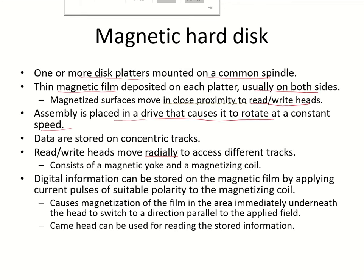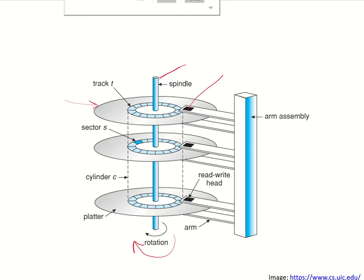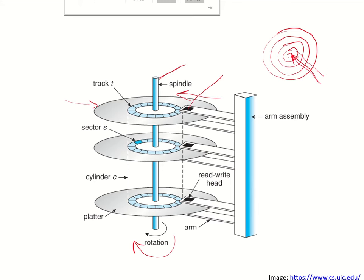These read-write heads can move radially to access the different tracks, because the data on the surfaces is stored in concentric tracks. On each platter, the data is stored in concentric tracks and the read-write head can move radially — it can go inside or move outside. So it travels radially.